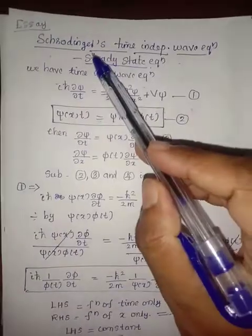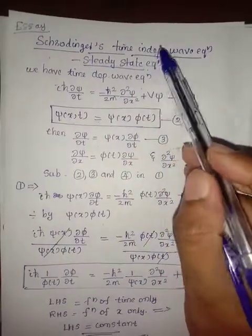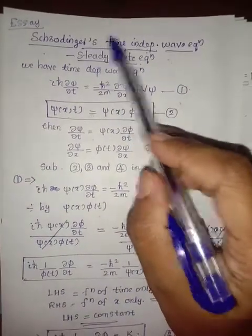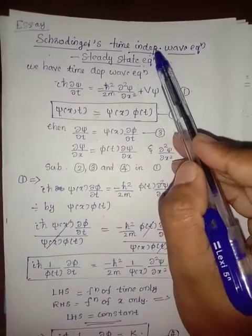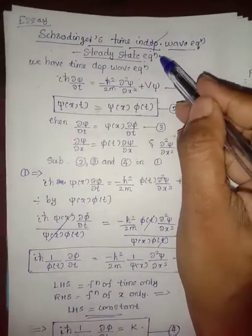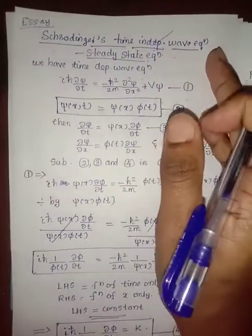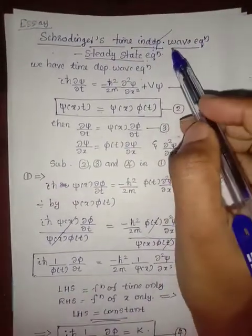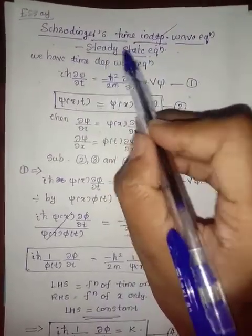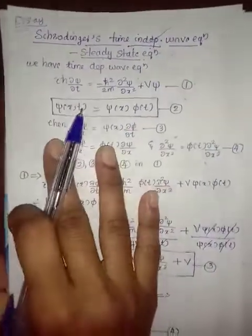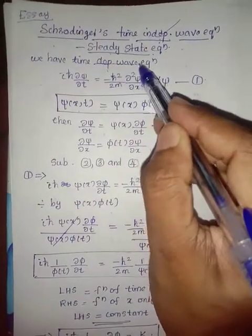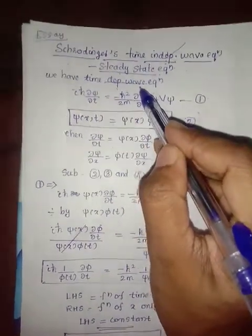We have the second essay: Schrödinger's time-independent wave equation. We have already discussed Schrödinger's time-dependent wave equation. Now we have the time-independent wave equation, which means this equation does not involve the time factor. This is also known as the steady-state equation. For this, we must know the time-dependent wave equation, and we are starting from it.